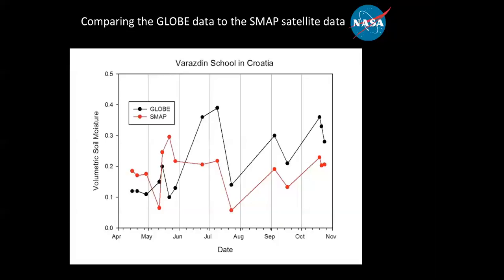What you see here is a graph from a school in Croatia — Varaždin school — which has been collecting soil moisture since April. What we did was extract the SMAP measurements and plot them to compare with the GLOBE data.